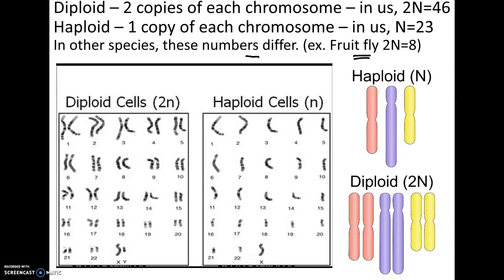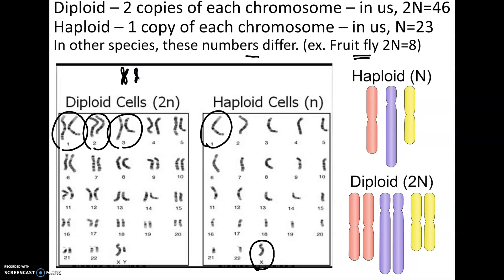Diploid means two copies of every chromosome; haploid means one copy of each chromosome. Notice that a haploid cell has only one sex chromosome. Keep in mind that whether chromosomes look like sticks or X-shapes is not what determines diploid versus haploid — it's about the number of copies. If a cell is before S phase, all chromosomes look like sticks; after S phase, they look like X-shapes with two sister chromatids joined together.